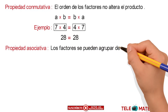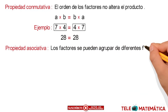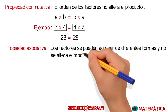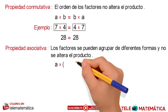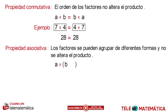The second property is the associative property, which is defined as: the factors can be grouped in different ways and this does not alter the product. Algebraically, we would have that A multiplied by B multiplied by C is equal to A by B, multiplied by C.